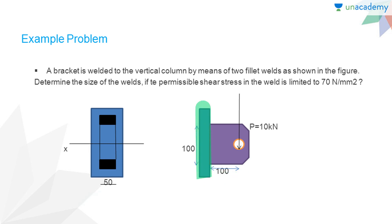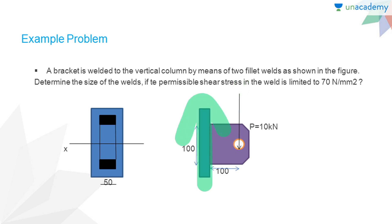If you draw the free body diagram for this vertical column, you can find that at the support there will be the presence of a bending moment due to the axial force, and also there will be the presence of a shear load of magnitude P in this direction. We have to calculate the stresses caused at the weld part due to this bending moment and also the shear stress caused by the axial force P equals 10 kilonewtons.